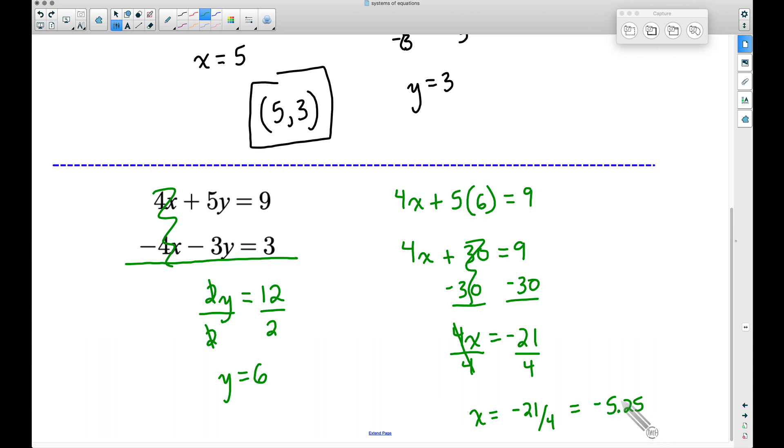So now we have our ordered pair, but make sure you write the x value first: negative 5.25, and then your y value of 6. Let's now double check and make sure this works for both equations. You may wonder how you need to write the answer—you will be told how to write the answer, whether to write it as a decimal or as a fraction.